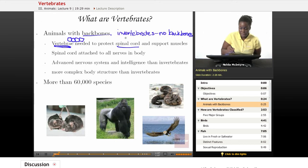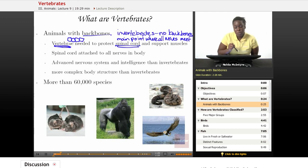The spinal cord is basically the main point where all nerves in the body meet and communicate with each other. And so it's very important that the spinal cord be protected, and that's what the vertebrae do.